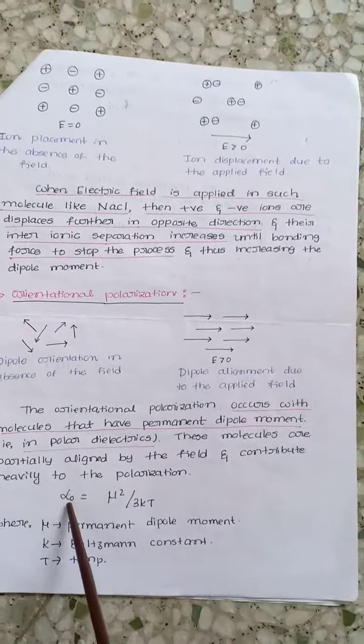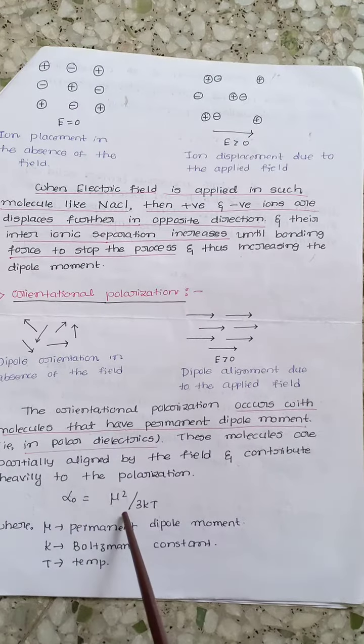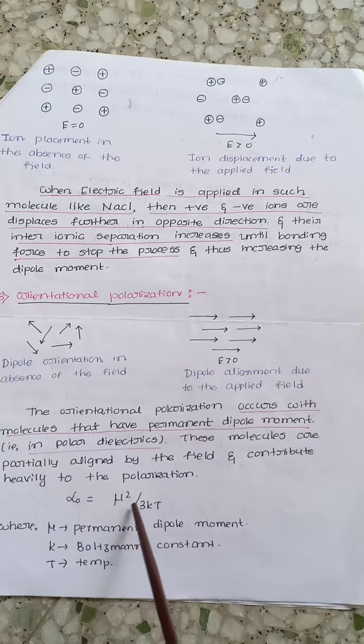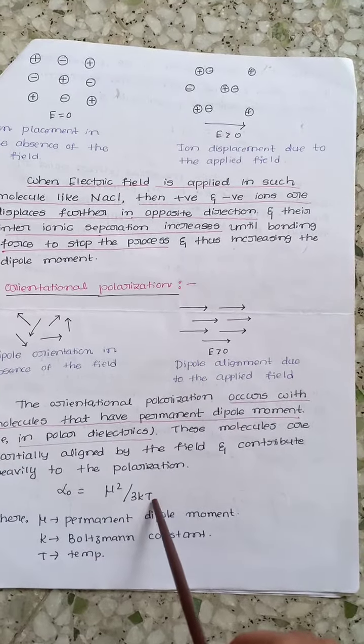It is denoted by alpha 0, which equals mu squared by 3kT, where mu is the permanent dipole moment, K is Boltzmann constant, and T is the temperature.